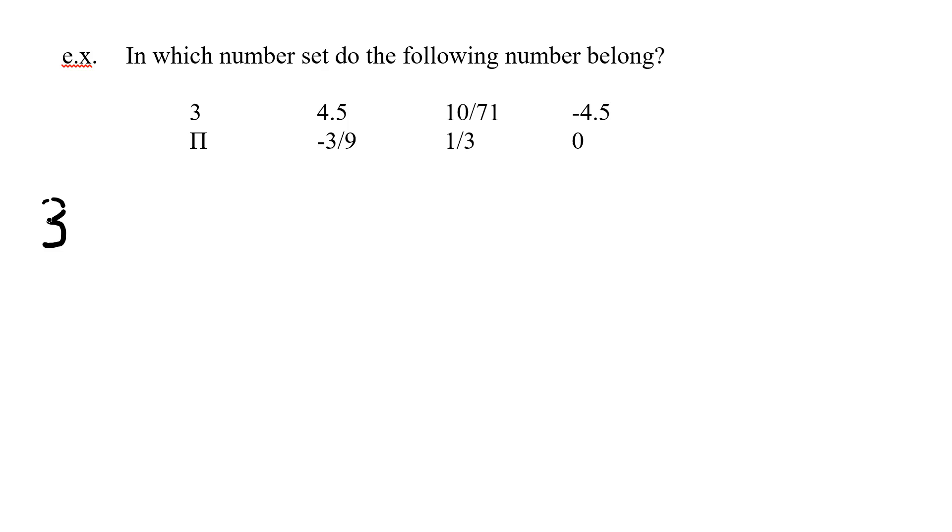Well, the number 3, if you look back to our circles, it's a natural. It's a whole. It's an integer. And it's a rational. So all of our positive whole numbers will have four labels we can give them.